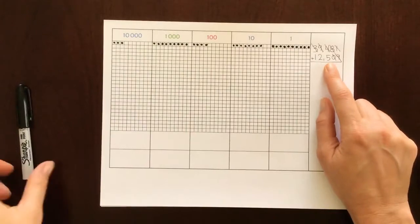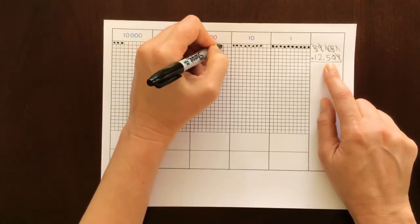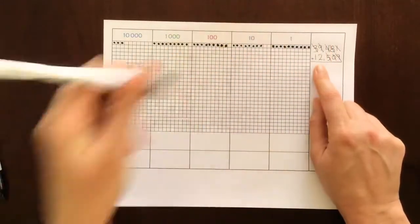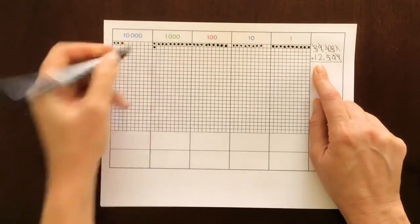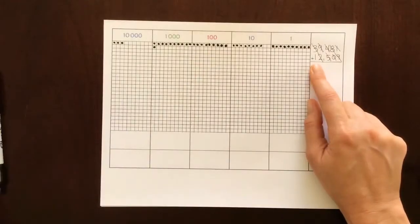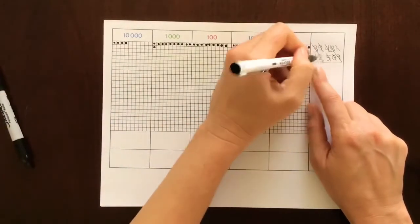The hundreds place we have 5: 1, 2, 3, 4, 5. In the thousands place we have 2: 1, 2. And in the ten thousands place we have 1.